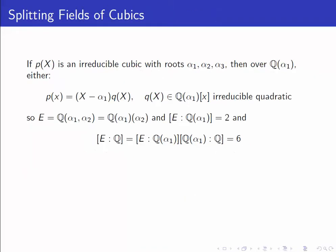Let's start off by looking at the splitting fields of cubics in general. If p of x is an irreducible cubic with roots alpha 1, alpha 2, and alpha 3, then when we adjoin one of the roots, two things can happen. One is that over this larger field, p of x splits as a linear x minus alpha 1 times an irreducible quadratic.